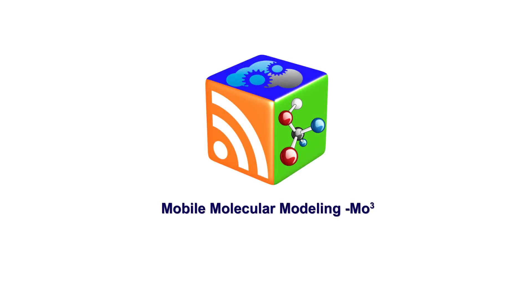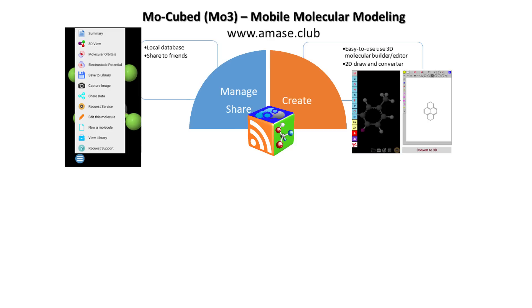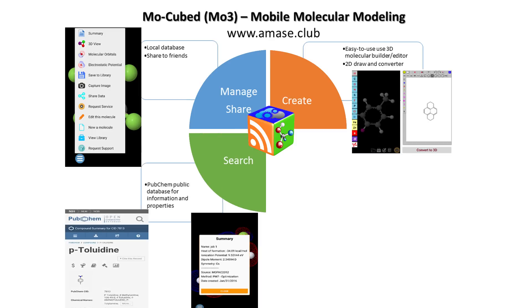MoCubed is the most comprehensive mobile solution for small molecule chemical information to date. The app can be used by teachers and students as an educational tool for all chemistry courses and by researchers for searching chemical information available on public databases.